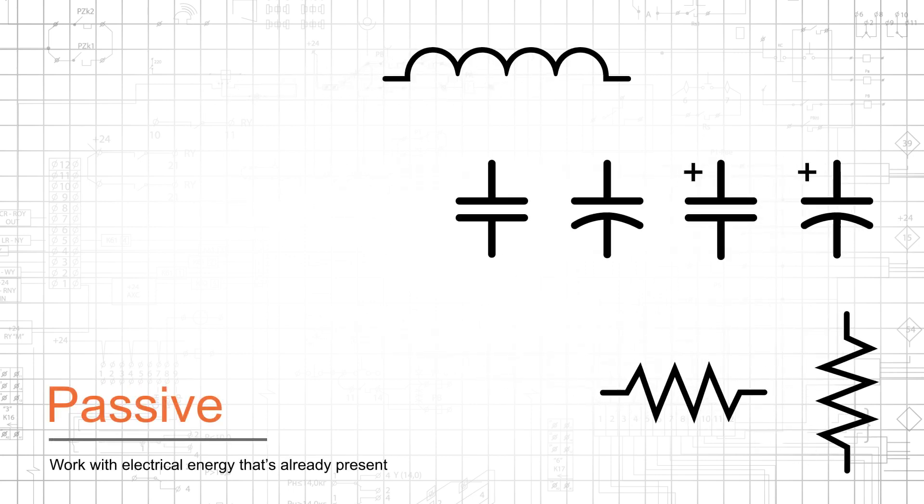Passive components work with electrical energy that is already present. The most common passive electronic components are resistors, capacitors, and inductors.